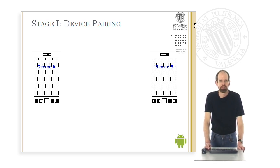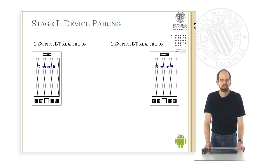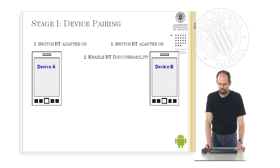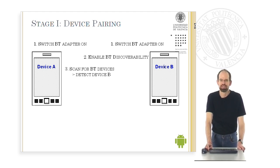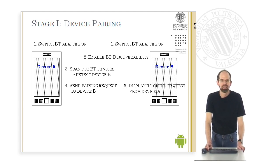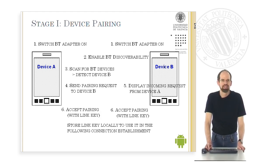First stage: device pairing. We must first switch the Bluetooth adapter on on both devices. Then one of the devices — in this case device B — must enable its Bluetooth discoverability, meaning that we make this device visible to its surroundings. Afterwards, the other device can scan for Bluetooth devices and will detect device B. Then it will send a pairing request to this device, which will be displayed as an incoming request to its user. The users on both devices will then accept the pairing, which will provide them with a link key that is stored locally and can be used afterwards in the following connection establishment.